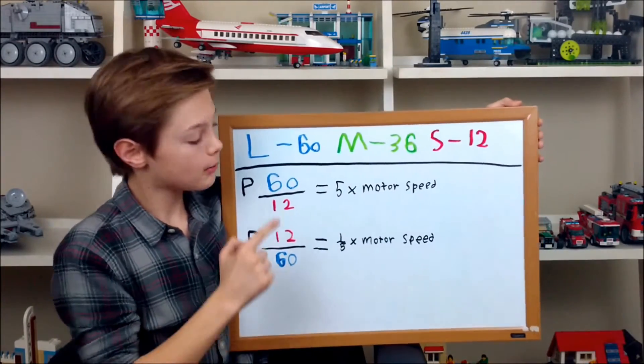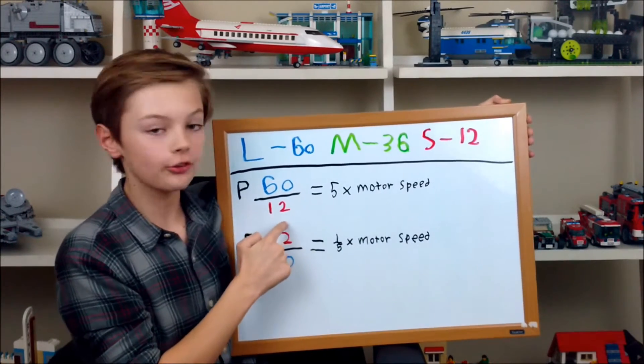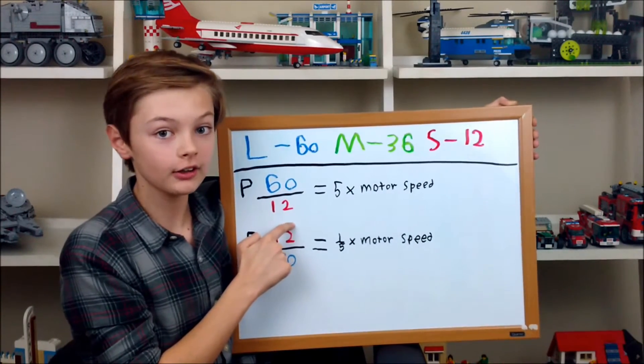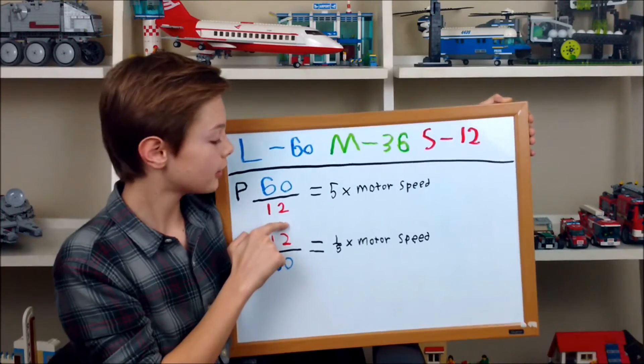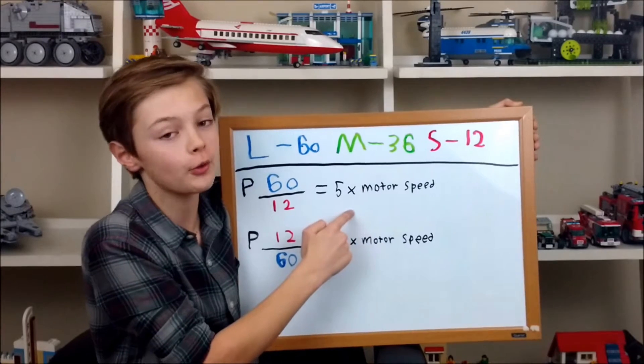Now, when a big gear powers (shown by P) a small gear, you divide the large gear by the driven gear—60 divided by 12—which gives you 5 times the motor speed.